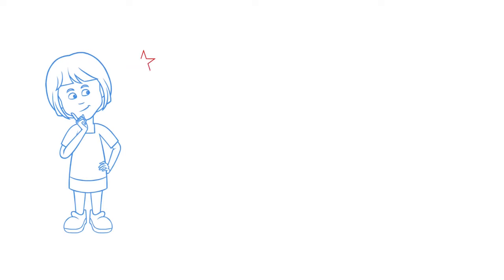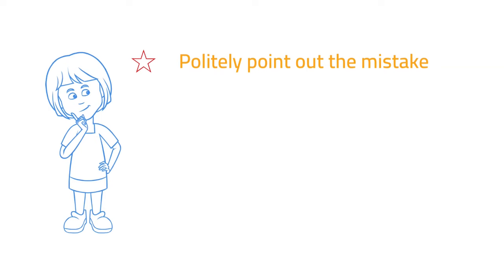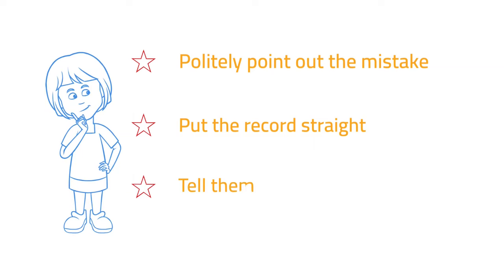When you see this happen, politely point out the mistake. It is possible that the other person has simply misheard or misunderstood you. Take the opportunity to put the record straight. Make your argument clearly and ensure that everyone understands it. Remind others that straw manning is a mistake, and request that they don't do it. Avoid making this mistake, develop better arguments, and have more productive discussions.